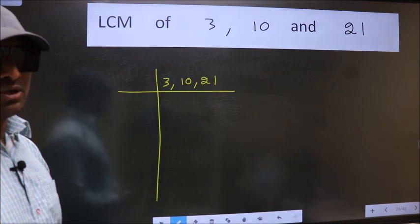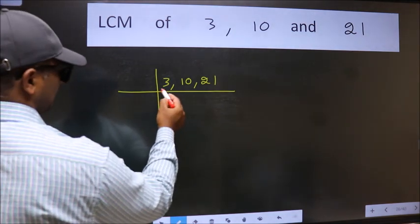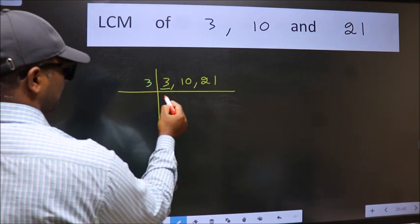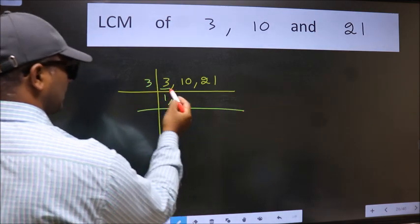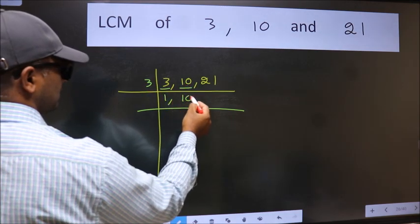Now we should focus on the first number which is 3 here. 3 is a prime number, so 3 once is 3. The other number 10 is not divisible by 3, so we write it down as it is.